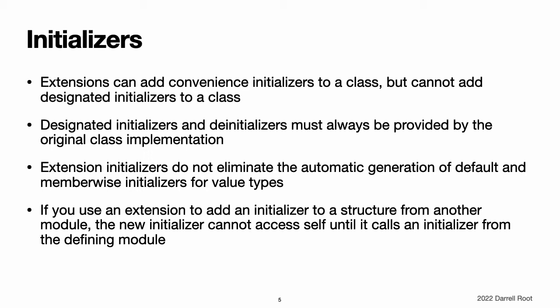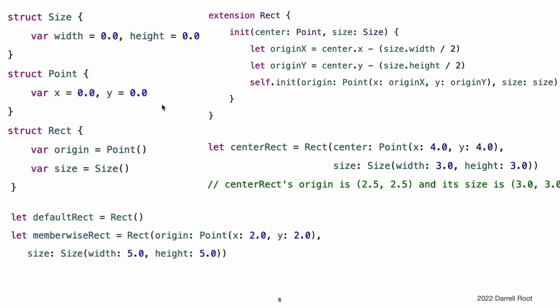If you use an extension to add an initializer to a structure that was declared in another module, the new initializer cannot access self until it calls an initializer from the defining module. This example defines a custom rect structure to represent a geometric rectangle. The example also defines two supporting structures called size and point, both of which provide default values of 0.0 for all of their properties.